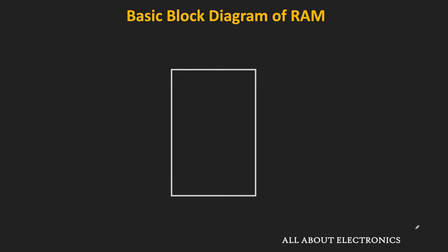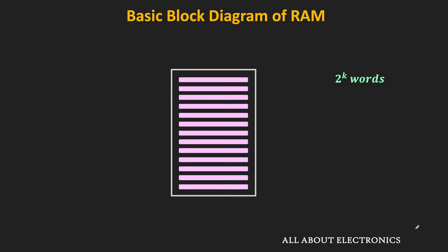The RAM is a collection of words, where a word is basically a group of bits or storage cells. If the RAM consists of 2 to the power k words, then each word can be accessed with the help of k address lines. By applying a specific binary address of k bits, we can access any of the words in the memory.